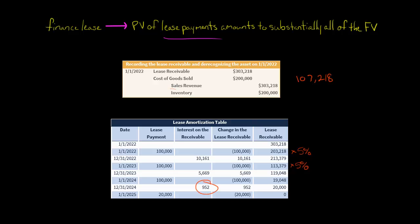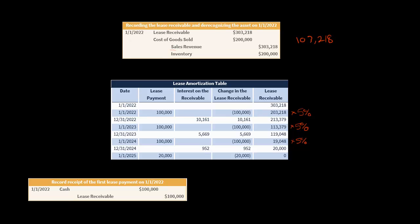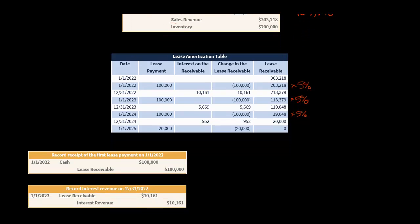Looking at the undiscounted lease payments, there are three payments of $100,000. The $20,000 at the end is the return — that's the guaranteed residual value. The lessee is returning the asset to the lessor, and it's supposed to have a value of $20,000.